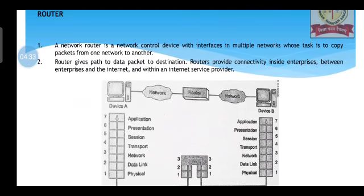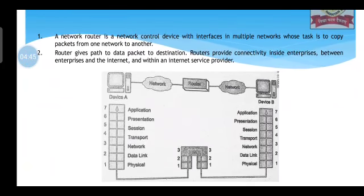A network router is a network control device with interfaces in multiple networks, whose task is to copy packets or data from one network to another. Router gives path to data packets to their destination. Router provides connectivity inside enterprises, between enterprises and the internet, and within an internet service provider. Router works in the network layer of the OSI model — relating to physical, data, and network layers only. Device A works as a sender and device B as a receiver; device A sends a packet to a router via the network, and the router forwards the packet to the receiver, device B.